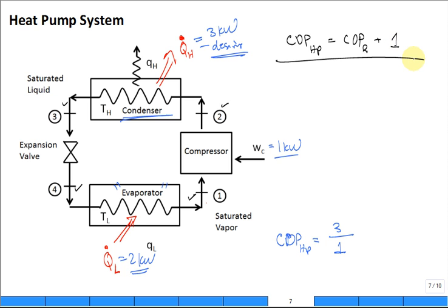So the COP of the heat pump is one plus the COP of the refrigeration system. And that's easy to show because what is the definition of the COP of the heat pump? Well, isn't that what we just wrote? Q dot H divided by W dot compressor?